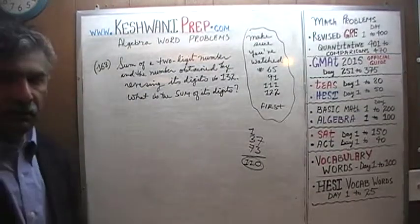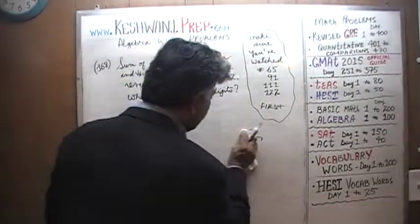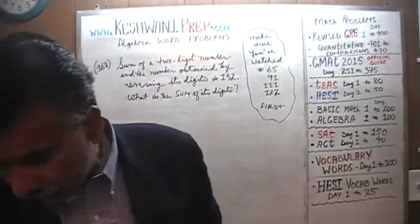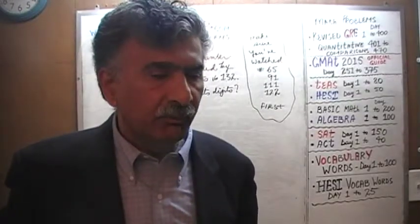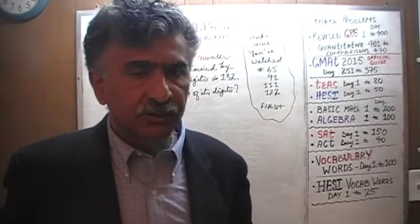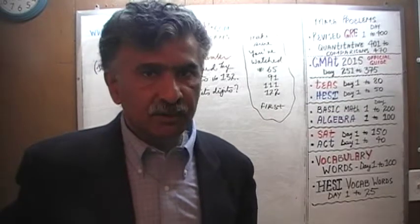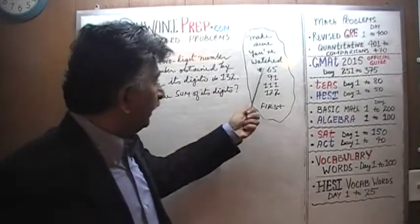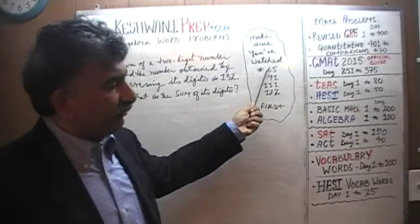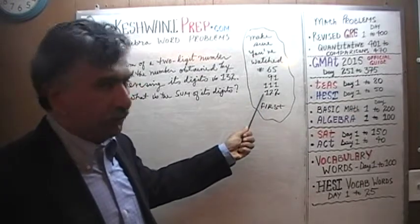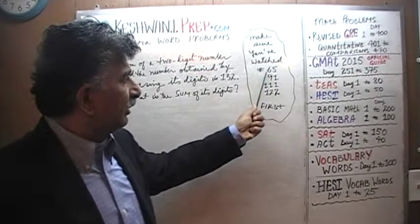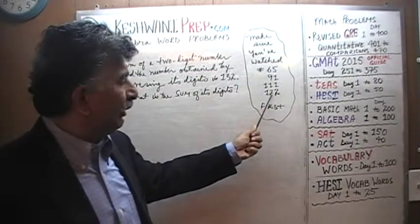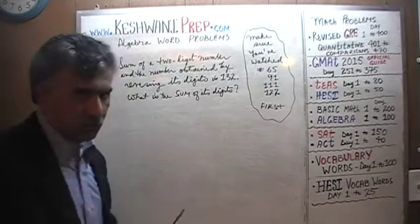In order to understand the work we're going to do here, and in order to understand how to set up this problem, we have to understand the basic notion of how to express a given number — whether it's a two-digit or three-digit number — in the language of algebra. That is something we learned in problems 65, 91, 111, and 122. Make sure you have watched those four problems first before you continue with this one.